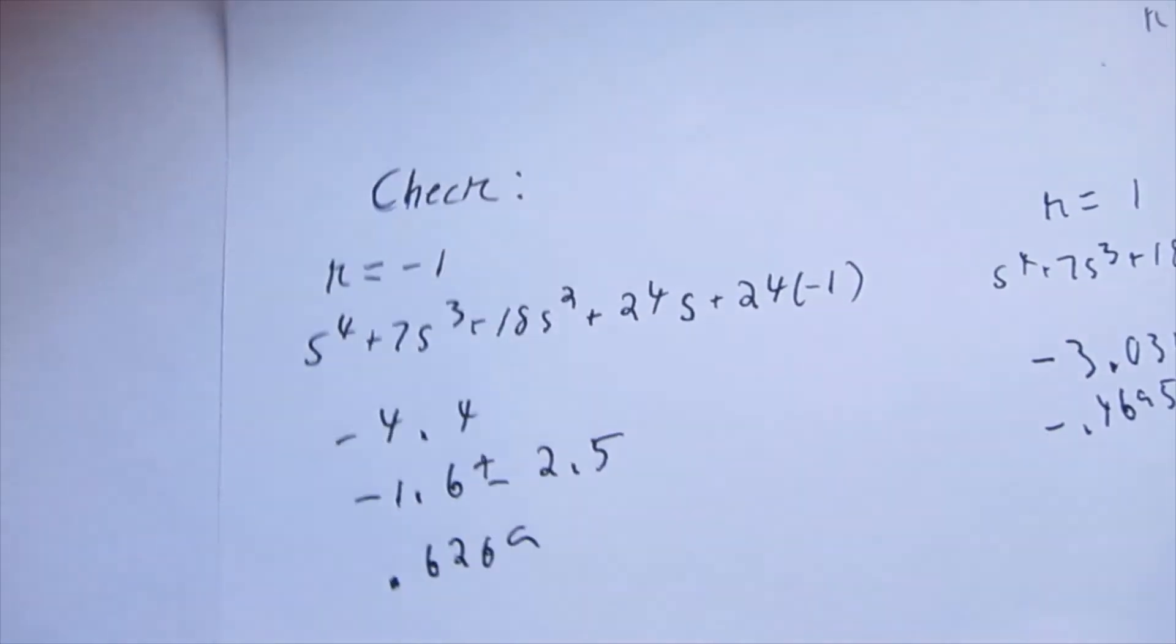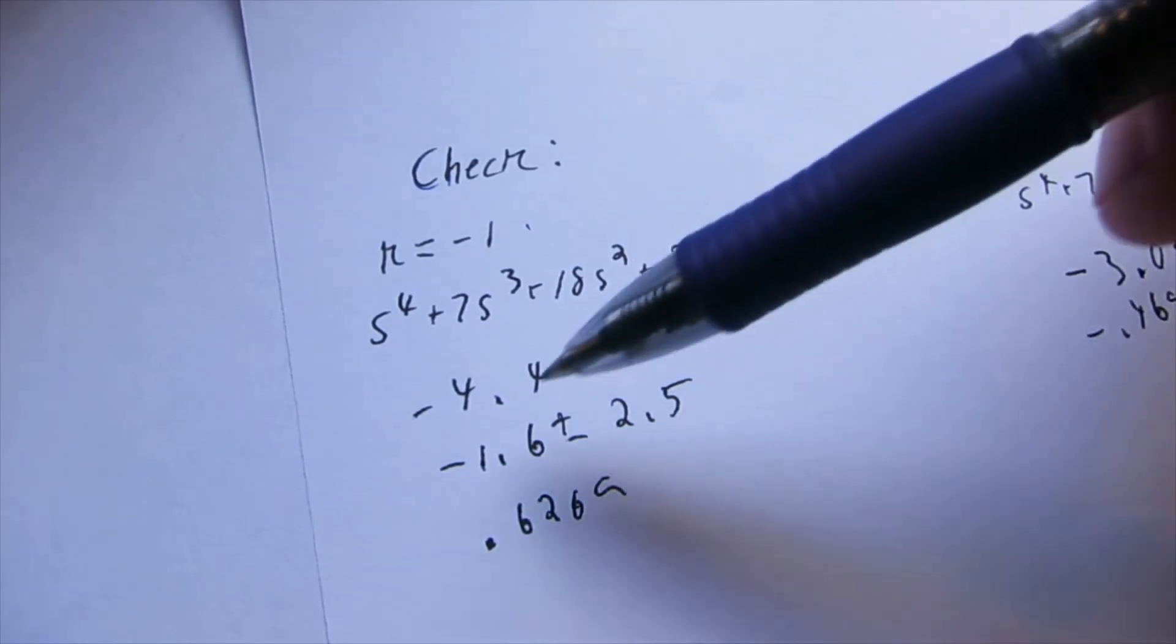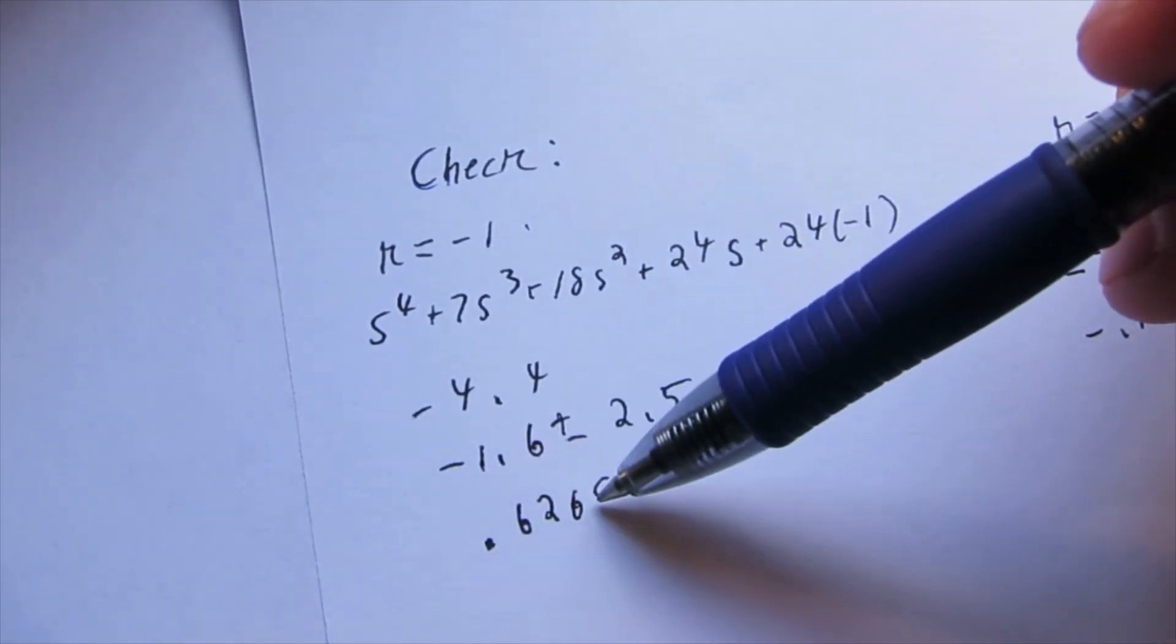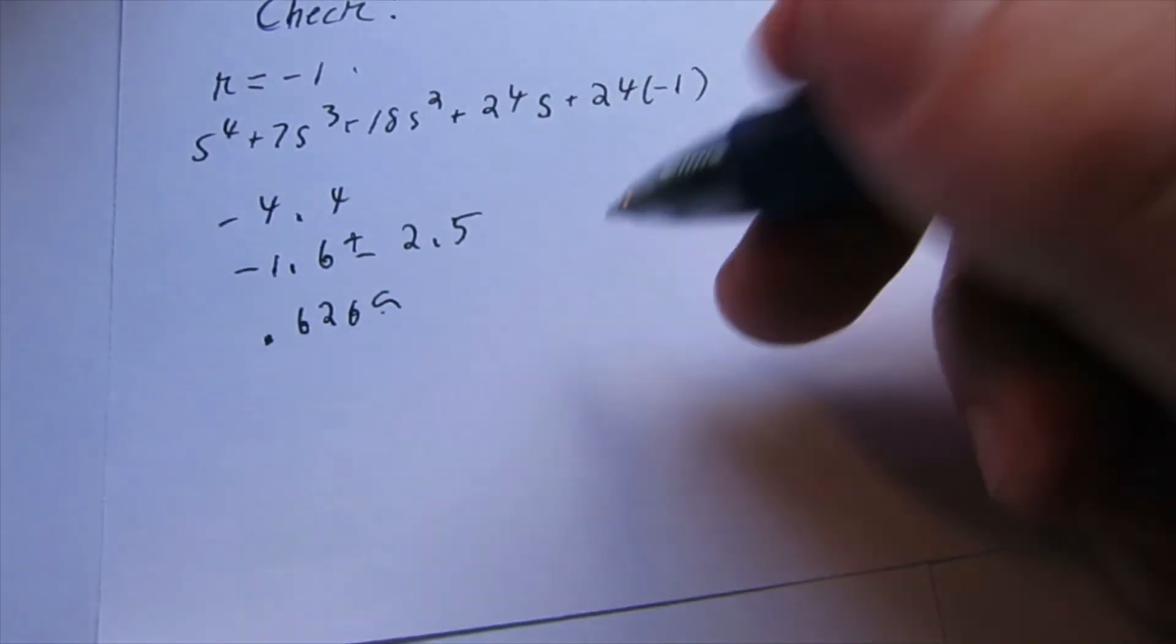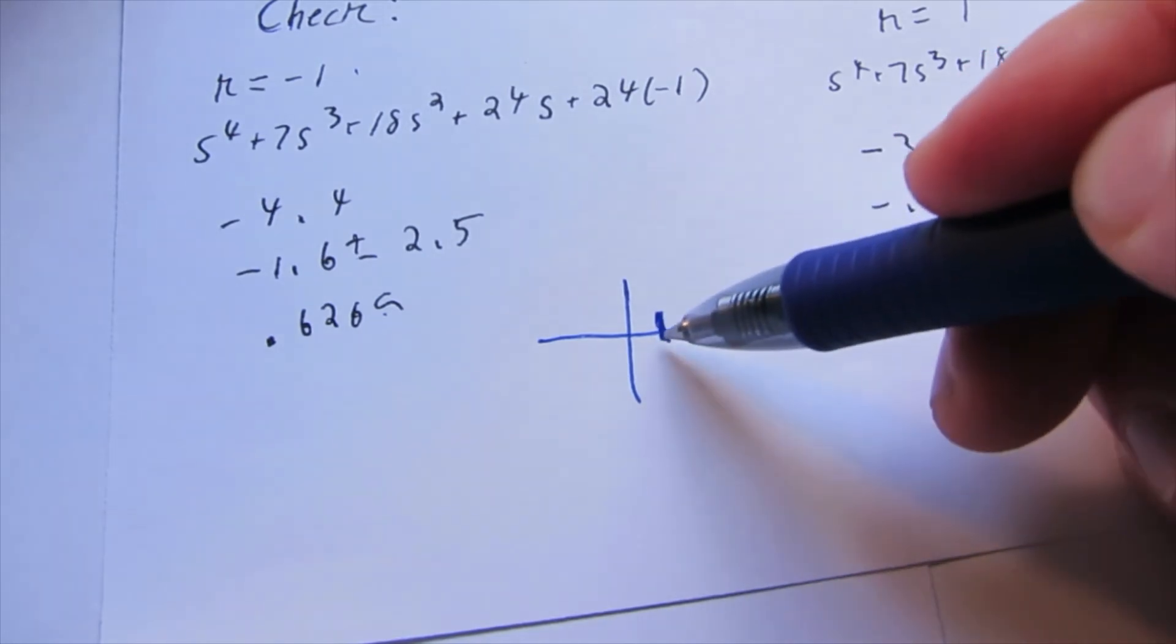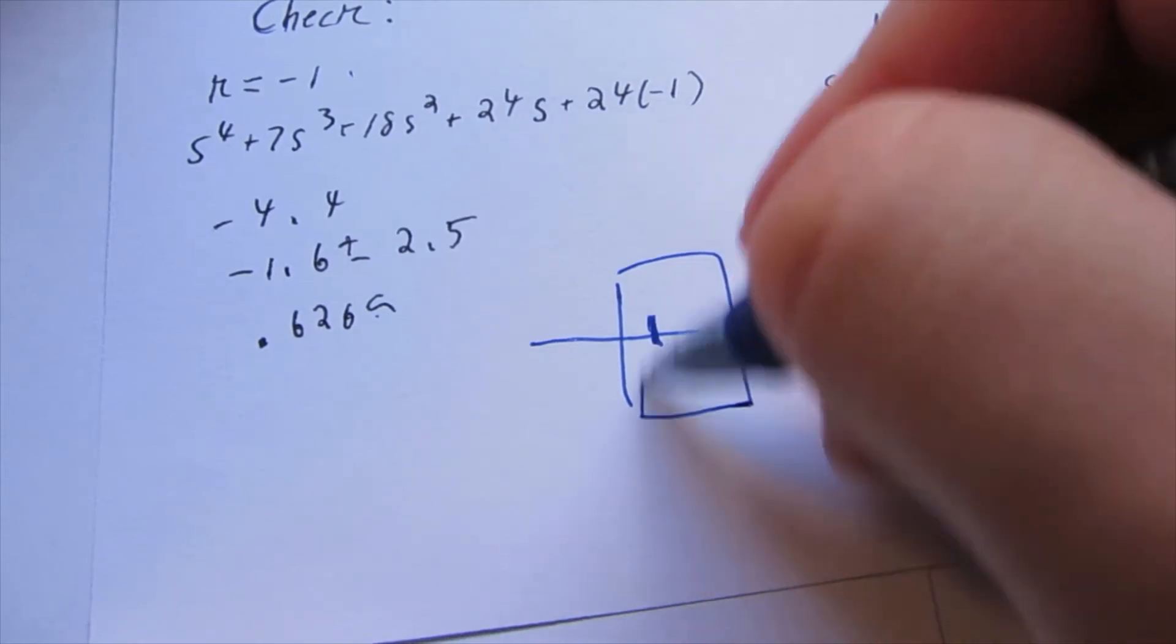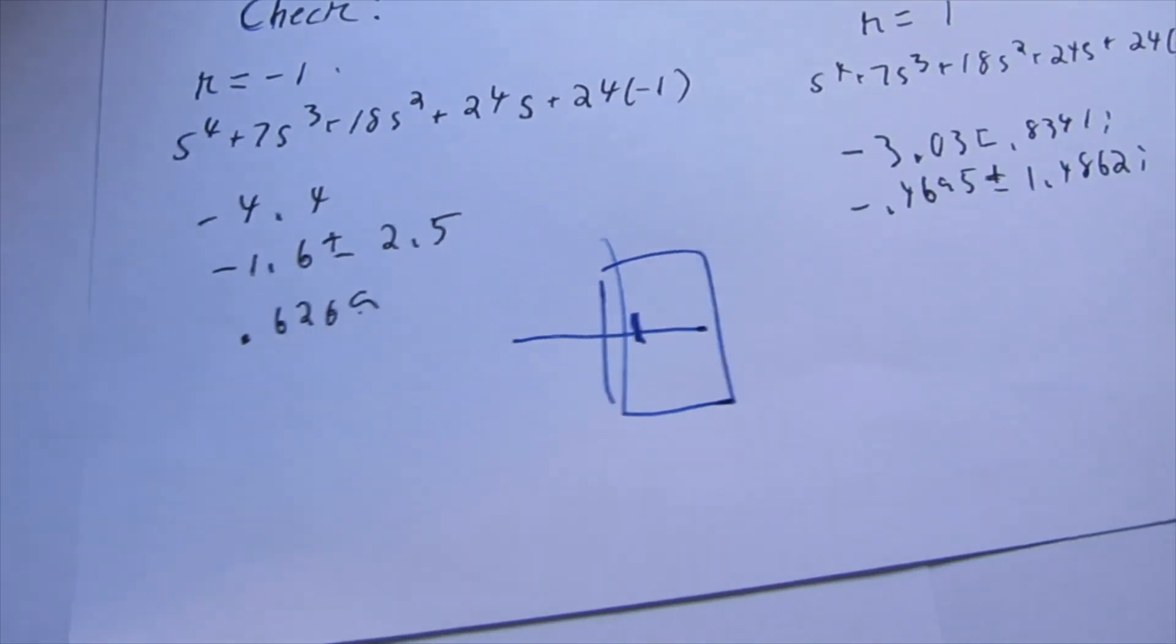So, I checked. So, if K equals negative 1, you have this as your polynomial. And then these are your roots. And what do we have? We have a positive root. We don't want that. Because if we're in the S-plane, if you have a root on the positive real axis, or on the positive right half plane, you know that that system is unstable.